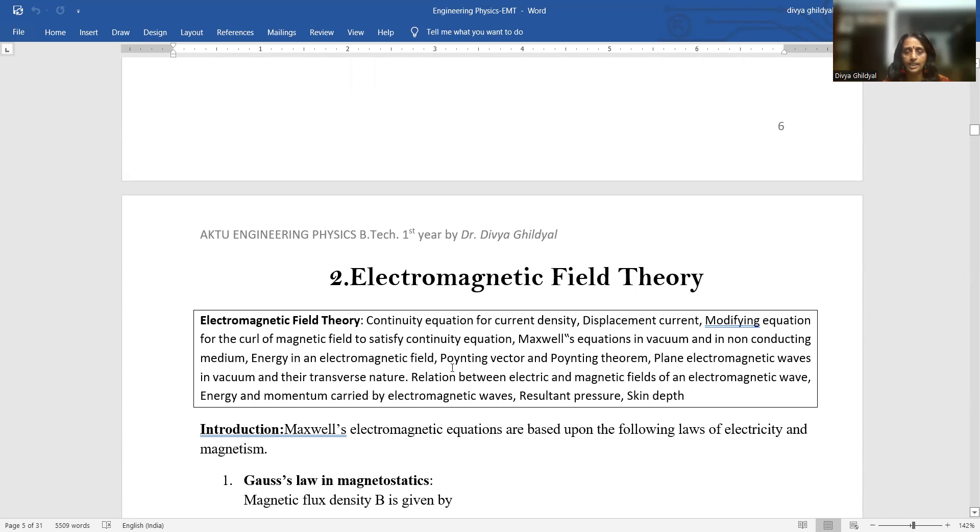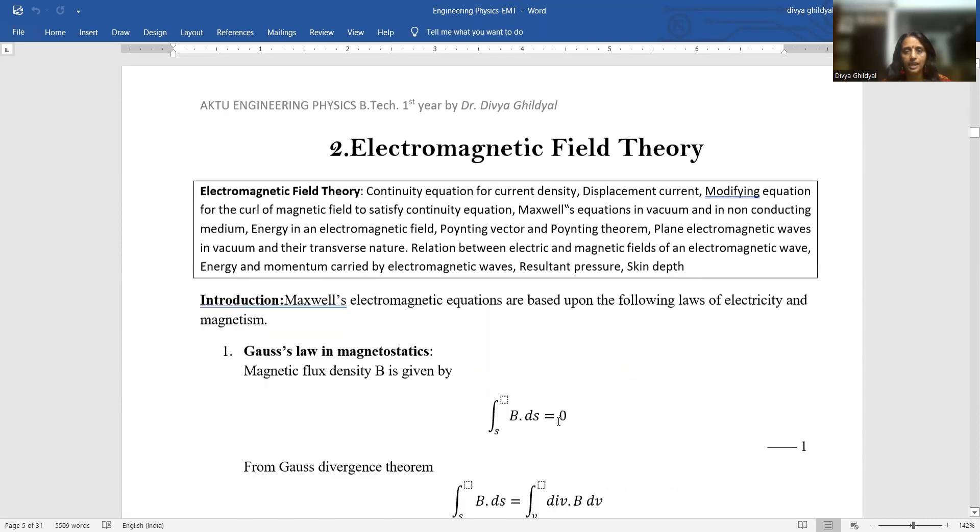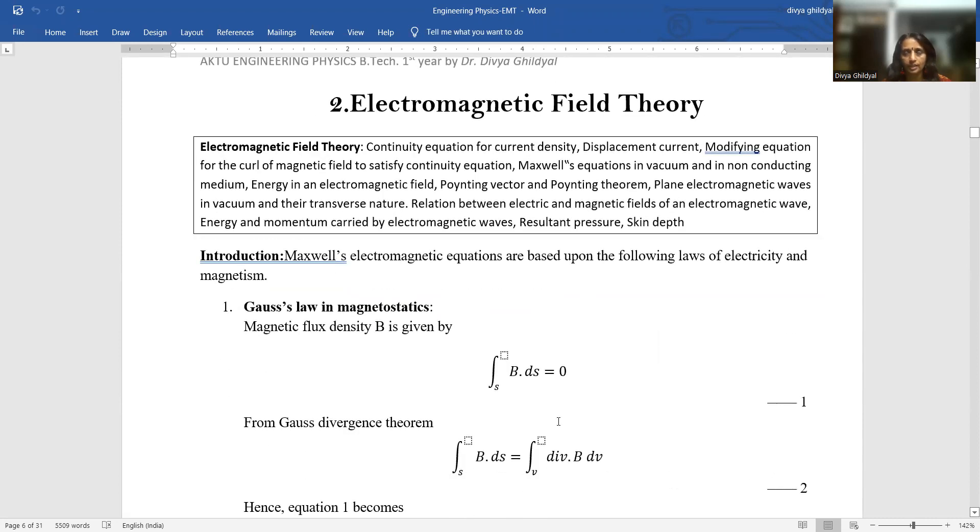Then how energy is transmitted in electromagnetic field with the help of pointing theorem and pointing vector. How this plane electromagnetic wave is transverse in nature and a very famous relationship of velocity of light which is combining the transverse nature of EMT wave. Then few relations between electric and magnetic fields, the energy momentum which is carried by the electromagnetic waves and the pressure they create and to what depth do they penetrate. PDF of what I am teaching can be had in the link which I have given below.